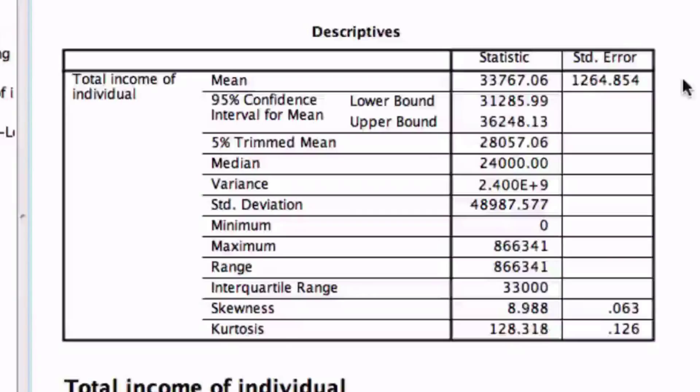So what does this mean? Well, this means that the average total income is between $31,285.99 and $36,248.13, and that we have a 5% chance of being wrong.